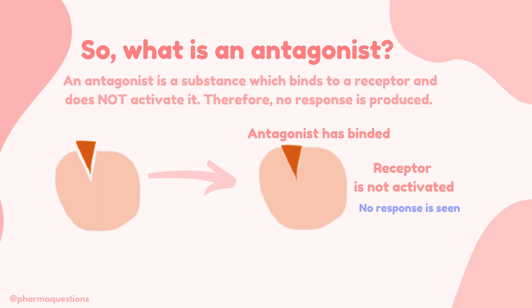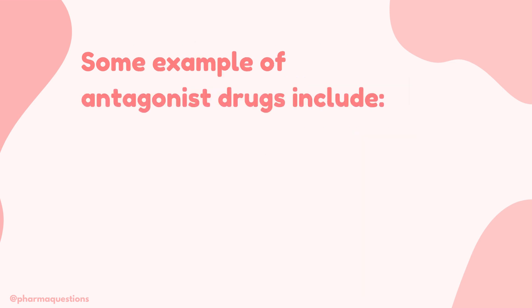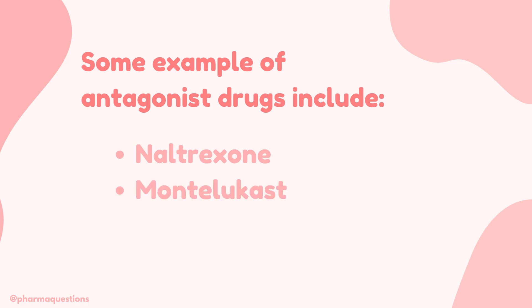Because the antagonist has blocked the receptor by binding to it, no other substances are able to bind to produce an effect. Some examples of antagonist drugs include naltrexone, montelukast and haloperidol.